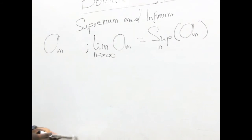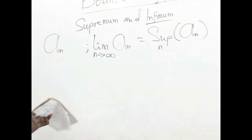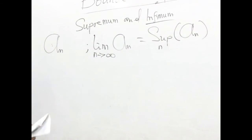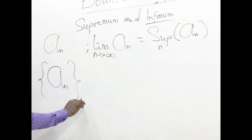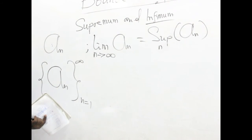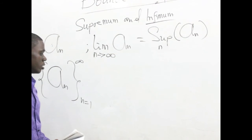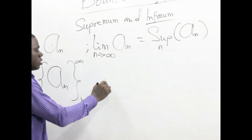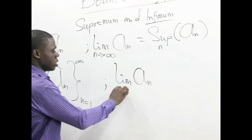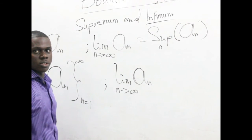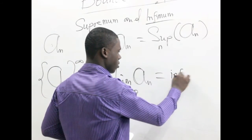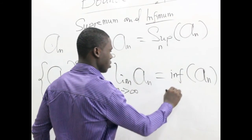The other concept is the Infimum, usually written as inf. For that particular one, it means that the sequence is decreasing. If we have a sequence and it is decreasing and it is bounded below, then it also means that the sequence converges. So for a decreasing sequence that is bounded below, the limit as n approaches infinity will converge to a certain value, and that's what we refer to as the inf of the sequence.